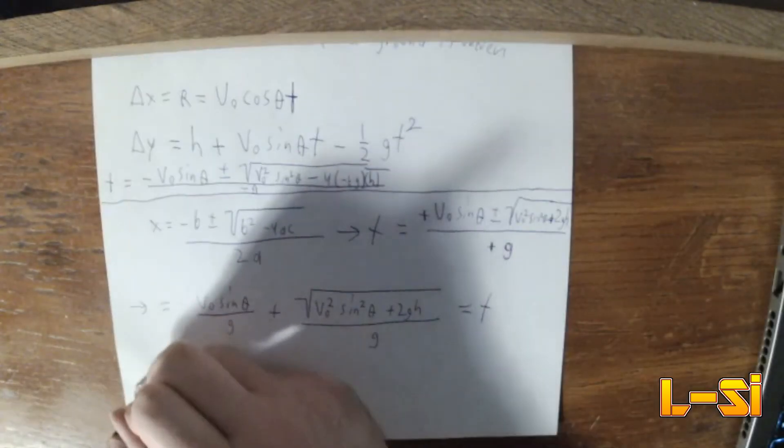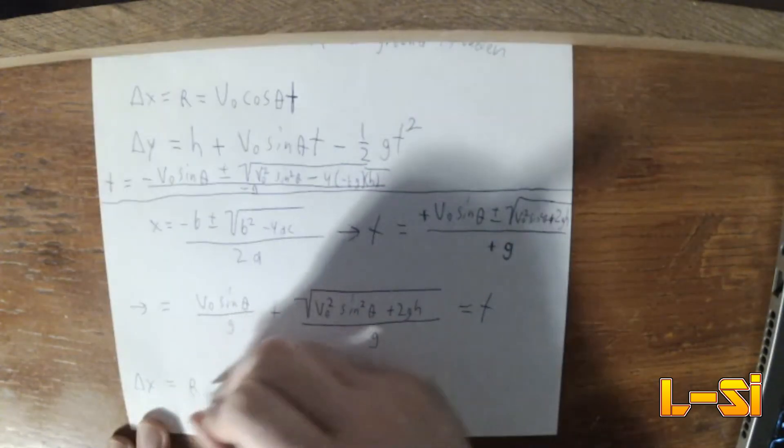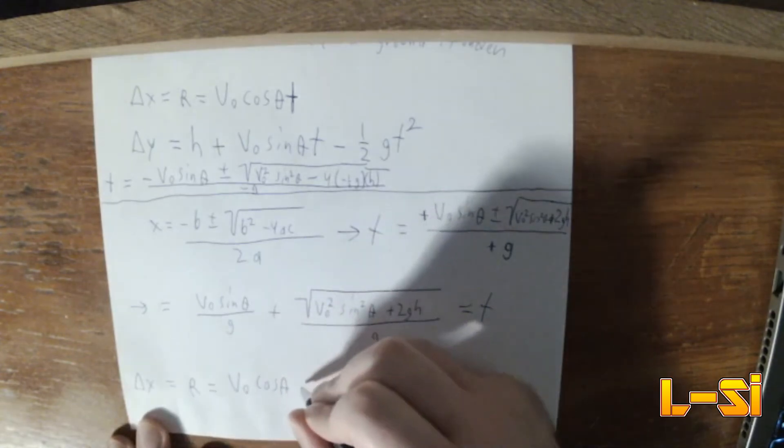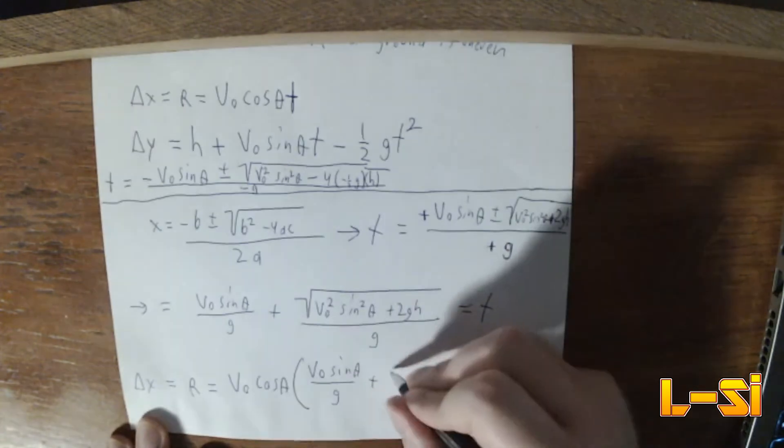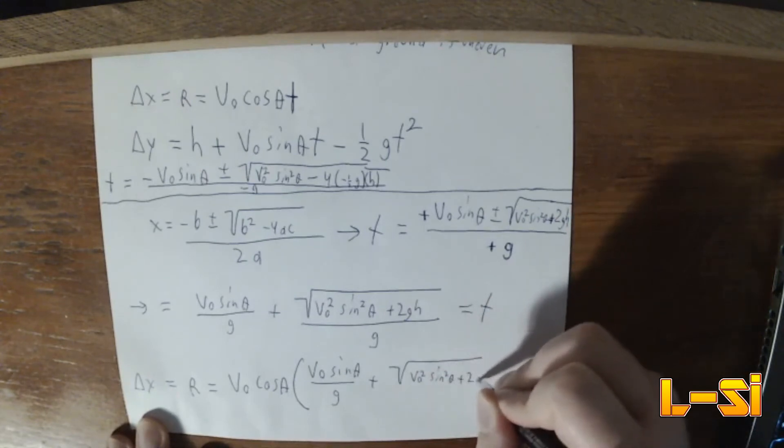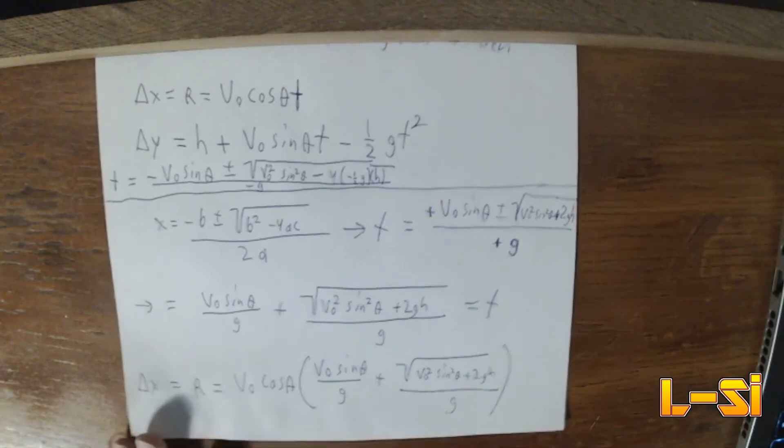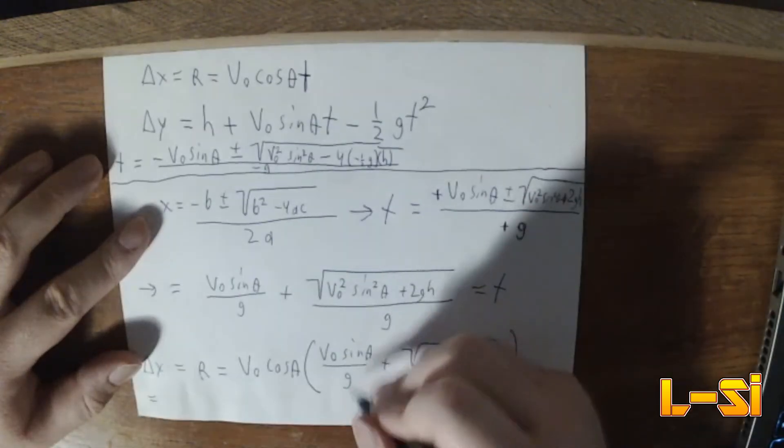Into our delta X or range equation. So we're going to have V-naught cosine of theta times V-naught sine of theta over G plus the square root of V-naught squared sine squared of theta plus 2GH all over G. And then that, I can factor out a 1 over G.